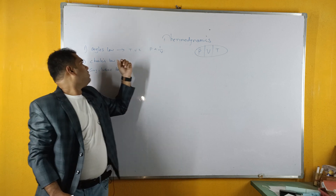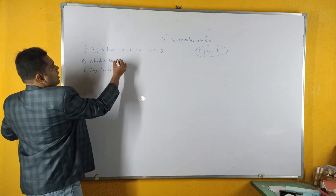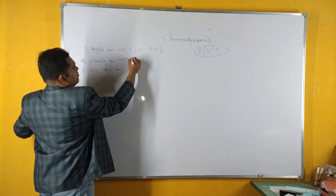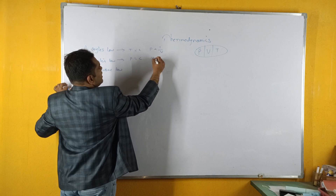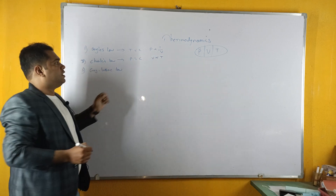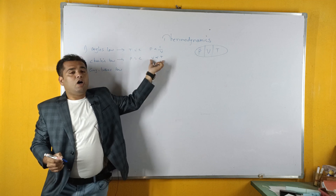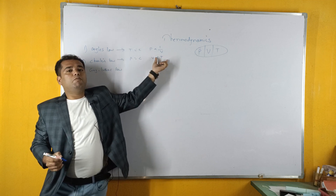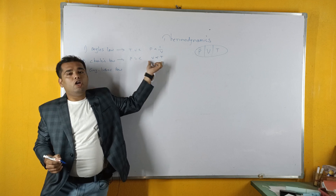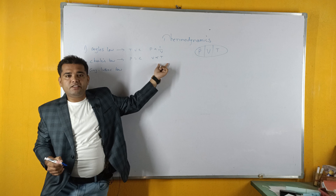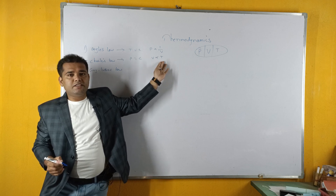Coming to Charles' law: Charles' law states that at constant pressure, the volume is directly proportional to temperature. So if the pressure is constant and the volume is increased, the temperature increases at the same time. If the volume is decreased, the temperature decreases at the same time.